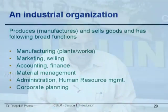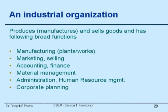I propose to take an example of a particular information system and to describe some aspects of how information is handled. The example is that of an industrial organization. Typically an industrial organization manufactures and sells goods and it has generally the following broad functions that have been listed here.